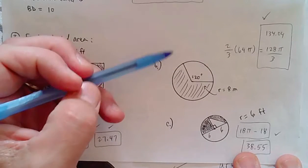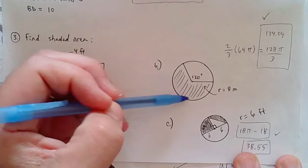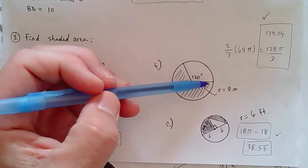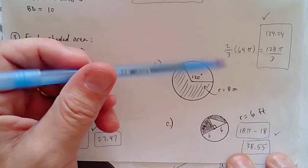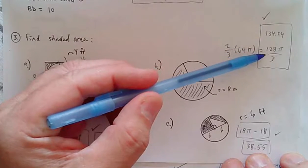This one, okay, 120 degrees is one-third. So the shaded area is two-thirds of 64π because the radius is 8. And you get the decimal equivalent of 128π over 3.